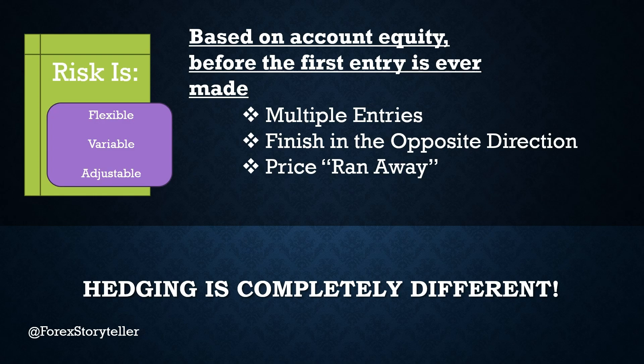When it comes to hedging you can actually be a lot more flexible, variable, and adjustable with your strategy and risk amount, and the size of your positions. That's mainly because everything is based on your account equity before you ever make the first entry. With one-way trades, once you're stopped out the trade is over and you start a new trade. With hedging, you open that position and either it wins or it gets hedged — once it gets hedged the trade is still open, so we're still on the same trade. That's why we want to base everything off the account equity before it starts.